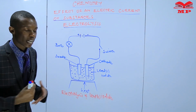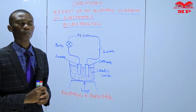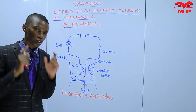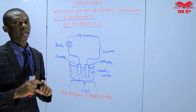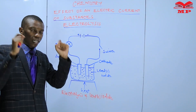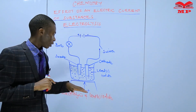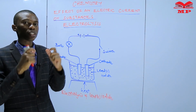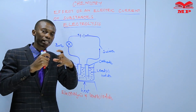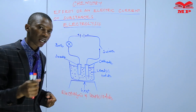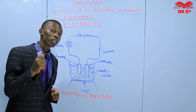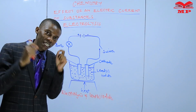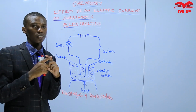Lead(II) iodide is also an ionic compound. Therefore, being an ionic compound, it does not conduct electricity in solid state, but it does in molten state. The heat weakens the electrostatic forces of attraction which are holding the ions of lead(II) iodide together. But when in solid state, it does not conduct because the ions are held together by electrostatic forces of attraction in fixed positions — they do not move.